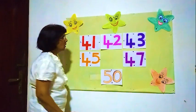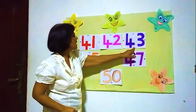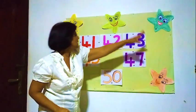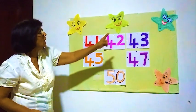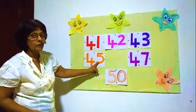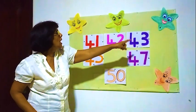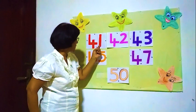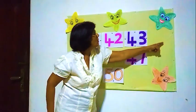Here 42, right. After 42, 43 is there. We have to find the next number. Here, the number after that missing number — before 45 — what is the number? It's 44. So 44 must come here.